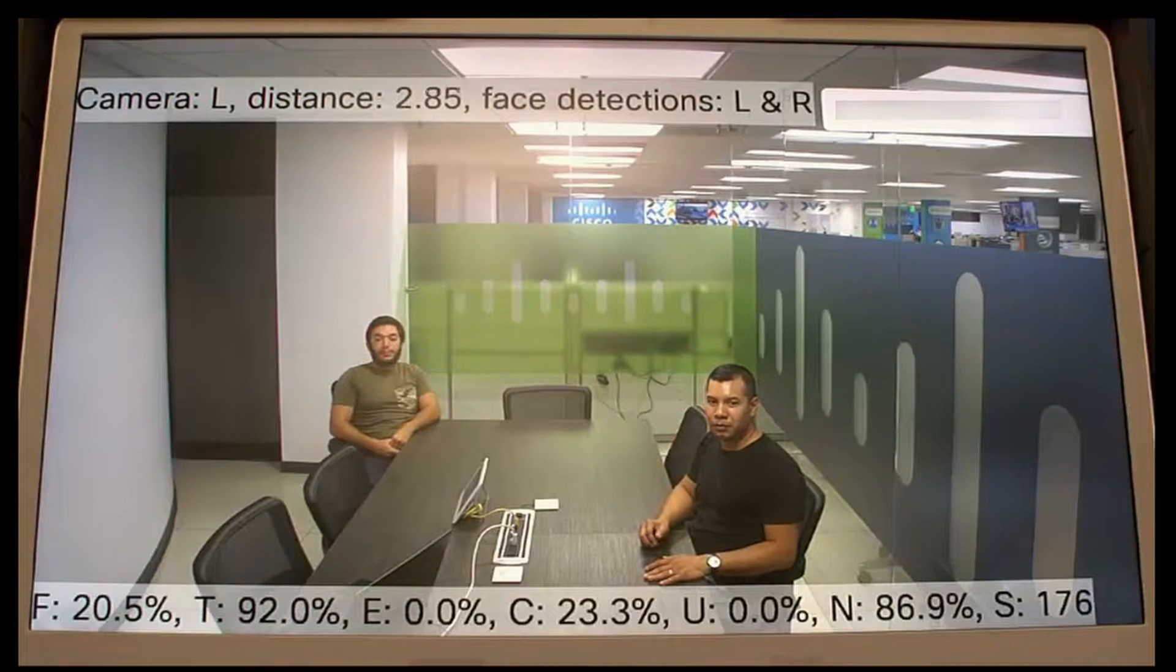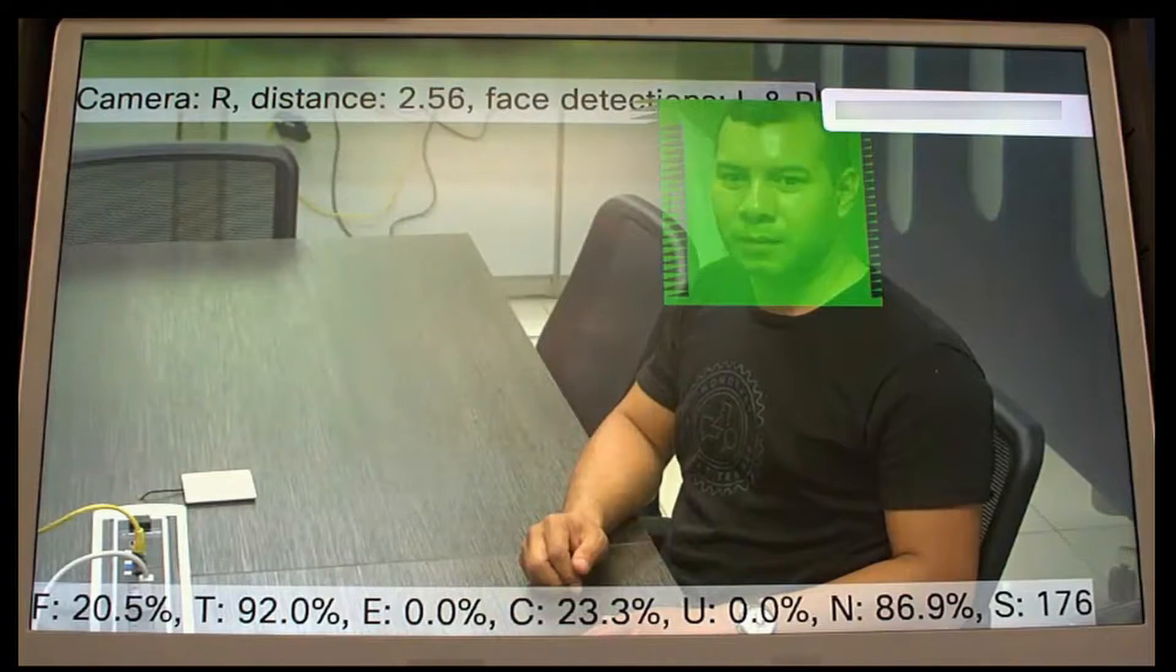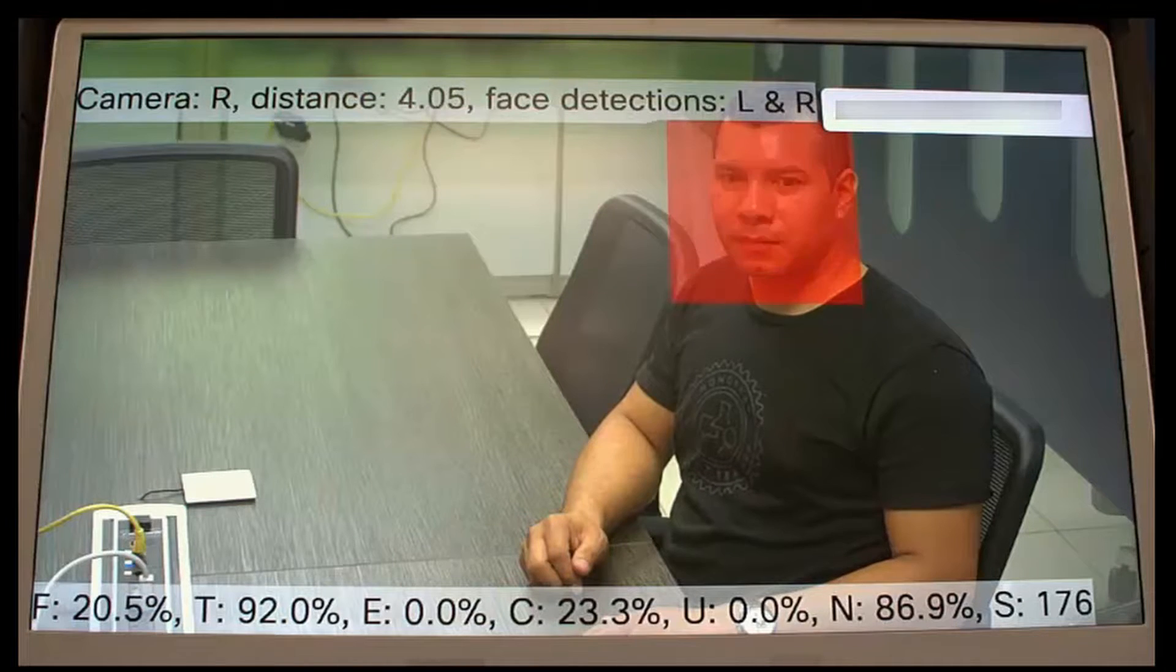Once the diagnostic is enabled, we need to use the screen in the room to look at the symptoms of the tracking issues if any are there. Starting with the information displayed at the top, from left to right we can look at Camera, Distance, and Face Detection.